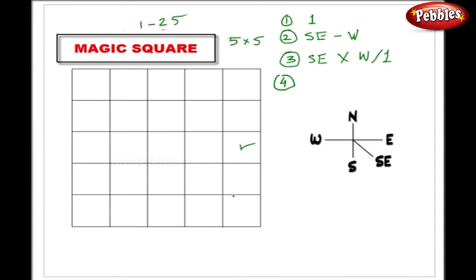Rule number 4 is about the last square. Whenever you land on the last square, there are two imaginary squares to the south-east. So the rule says that you have to write the next number in the next square to the west. Now let us fill the grid.